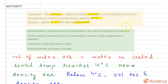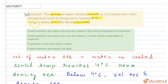Now check the options. The assertion states that the density of water remains constant as it is cooled from room temperature until its temperature reaches four degrees Celsius — this is an incorrect statement. The reason states that below four degrees the density increases — this is also an incorrect statement. So both assertion and reason are false.